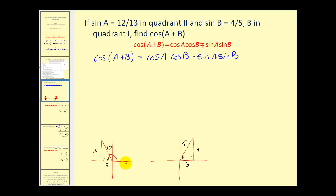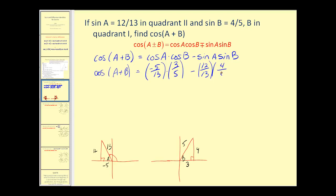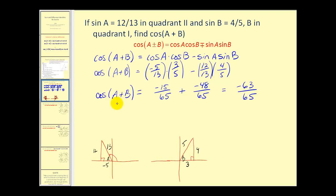Using this information to complete the identity: cosine of angle a is adjacent over hypotenuse, or negative five thirteenths, times cosine of angle b, which is three fifths, minus sine a times sine b — that's twelve thirteenths times four fifths. This product gives negative fifteen over sixty-five, plus negative forty-eight over sixty-five, which equals negative sixty-three over sixty-five. So the cosine of a plus b is equal to negative sixty-three sixty-fifths.